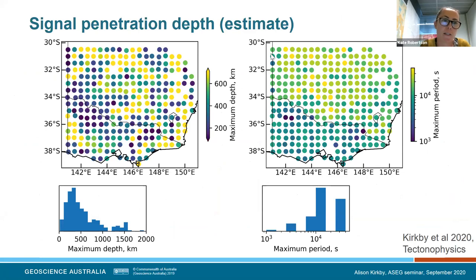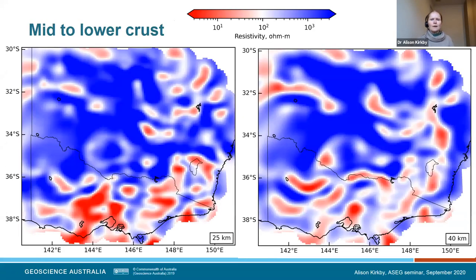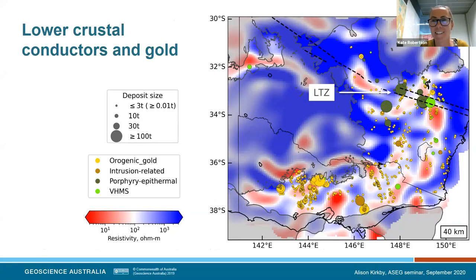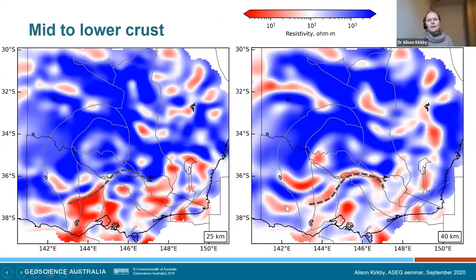Broken Hill is up where this conductor comes across here, I think. I mean, we can look in more detail. And the Stavely region — that conductor is down in the southeastern Delamerian. I'd have to overlay where exactly they are to see, but it looks like there are conductors in the general vicinity.